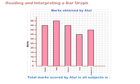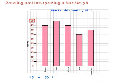F. The total marks scored by Atul in all subjects is 45 plus 50 plus 45 plus 35 plus 40, which is equal to 215.